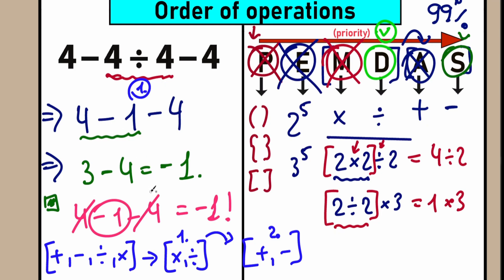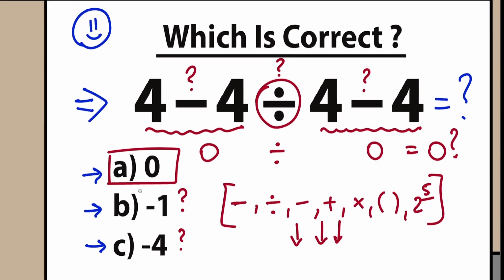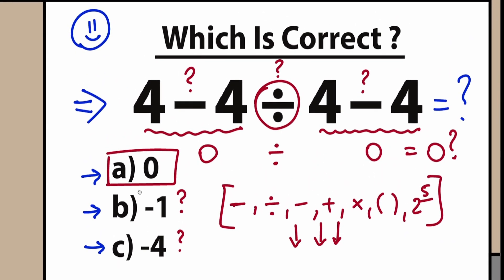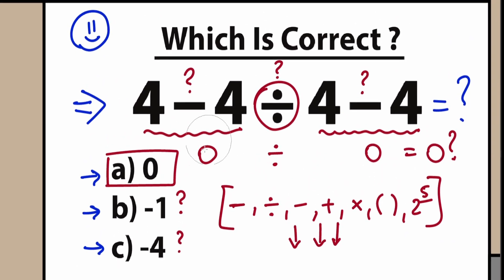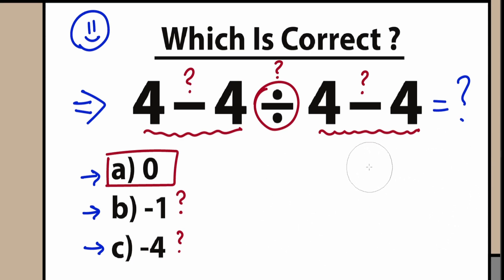I really hope you get the point. Let's go back to the beginning — I want to show you a really interesting hint. In the beginning, a lot of students subtracted 4 minus 4 on the left, and then subtracted 4 minus 4 on the right side.